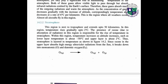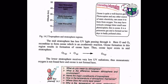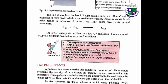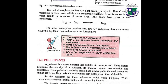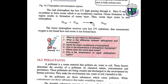Stratosphere. This region is next to the troposphere and extends up to 50 kilometers. In this region, temperature rises gradually up to 2°C. The presence of ozone in this region is responsible for the rise of temperature in the stratosphere. Temperature increases as altitude increases — the lower layer temperature is about minus 58°C and the upper layer is about 2°C. The mid stratosphere has less UV radiation, where the formation of ozone occurs: O2 + O forms the ozone layer O3. The lower stratosphere receives very low ultraviolet radiations.